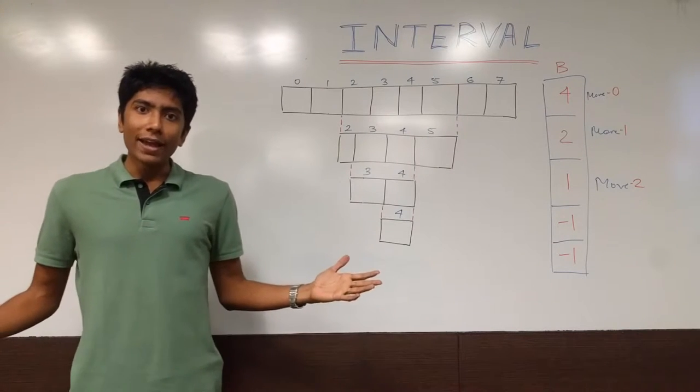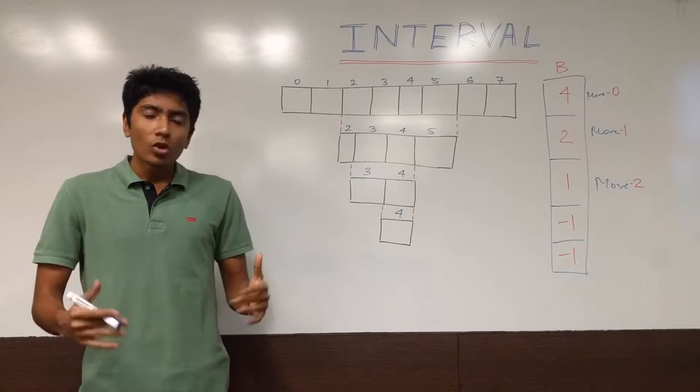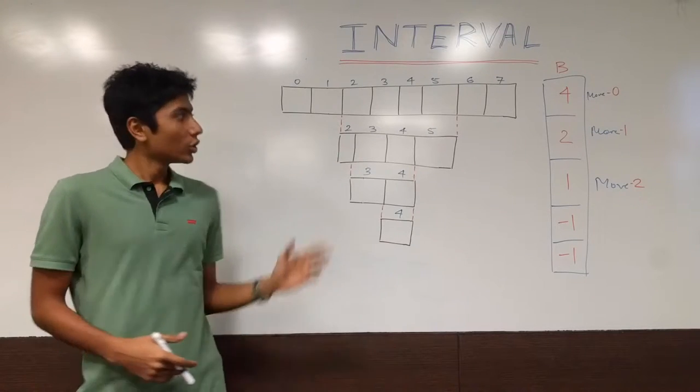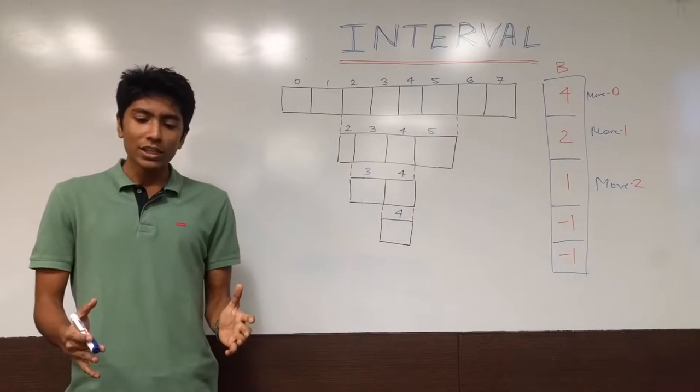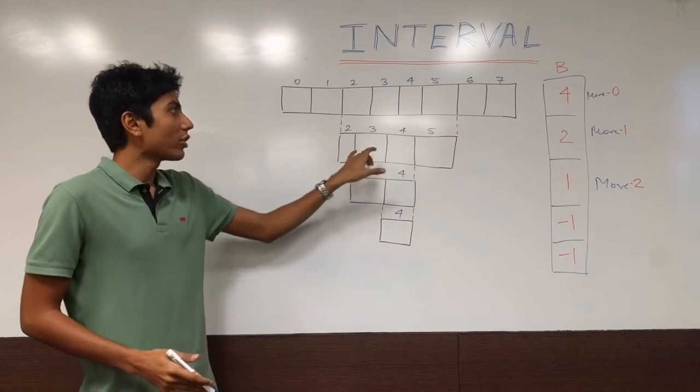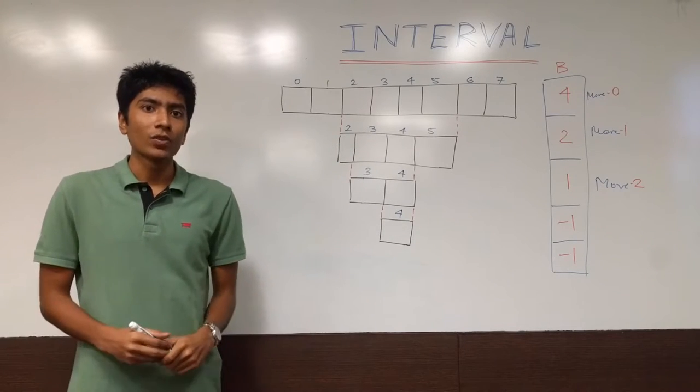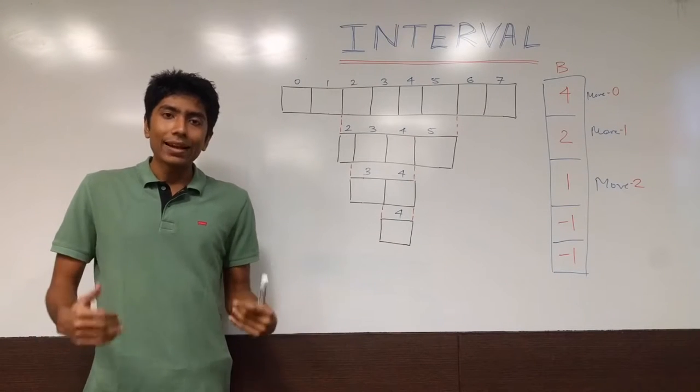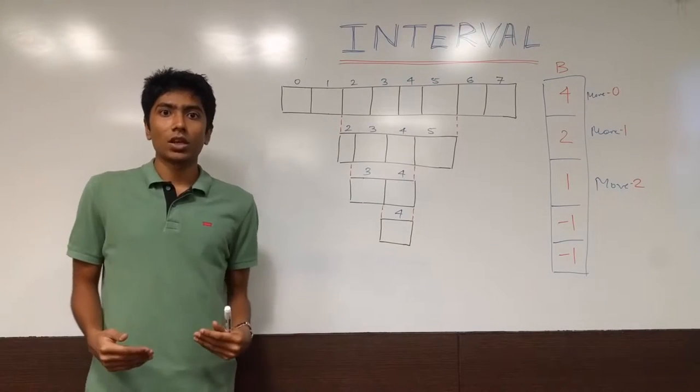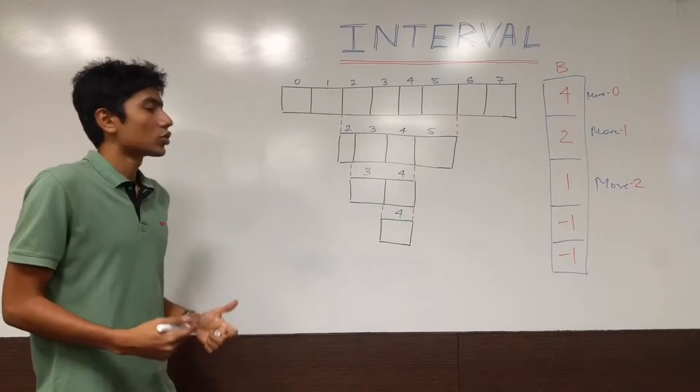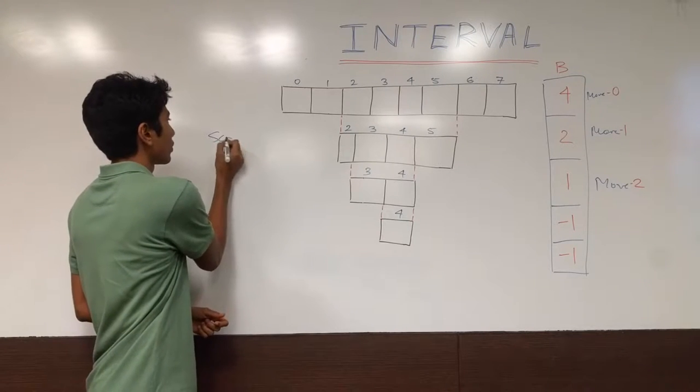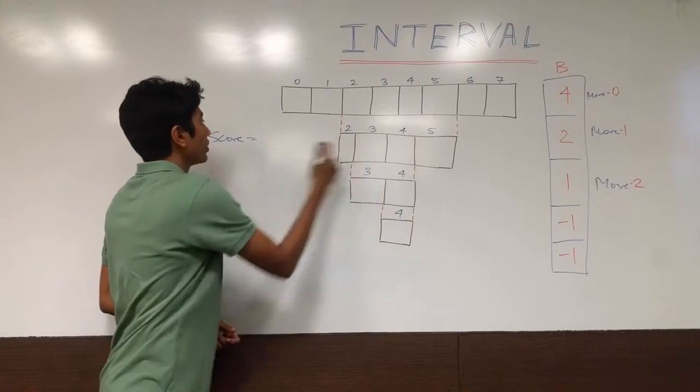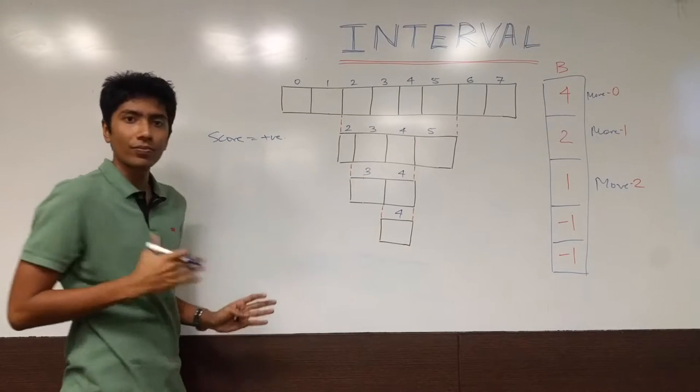What it says is that you have this big array and you are going to be playing a game with an opponent using this array. Firstly you are given the array and you have to choose a range from that array. When you choose a range, you get all the elements in that range, the sum of all the elements in your score. The sum of all these elements get added up to your score.